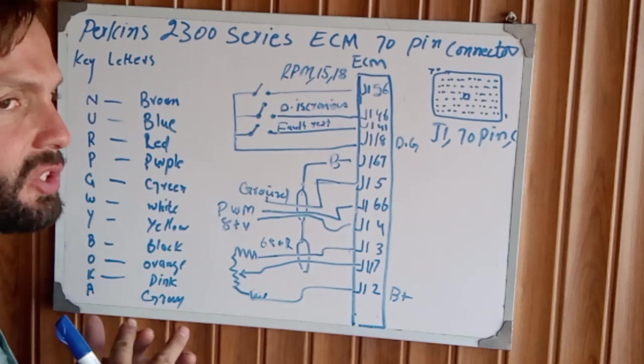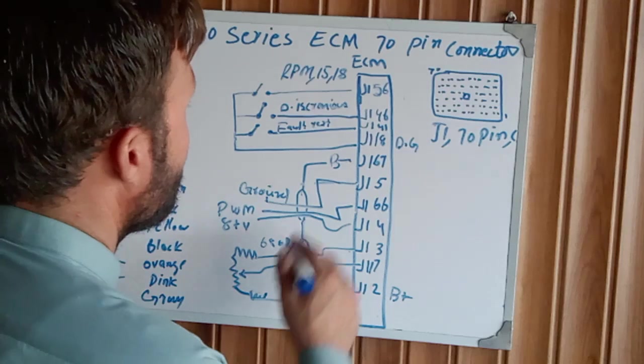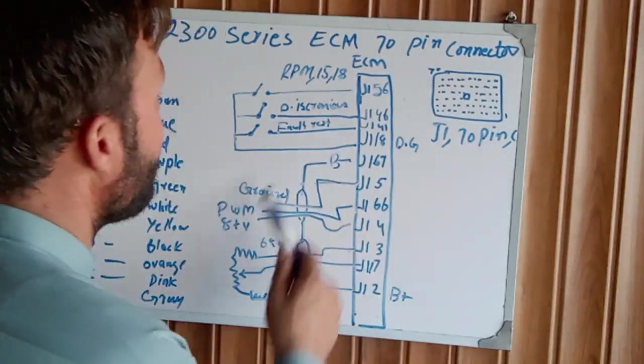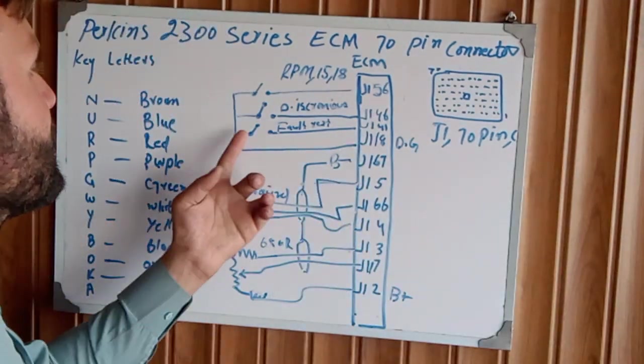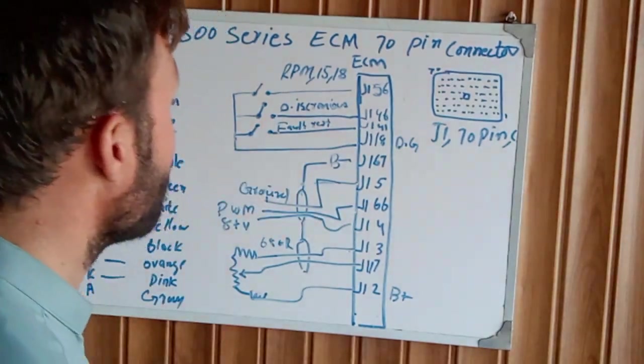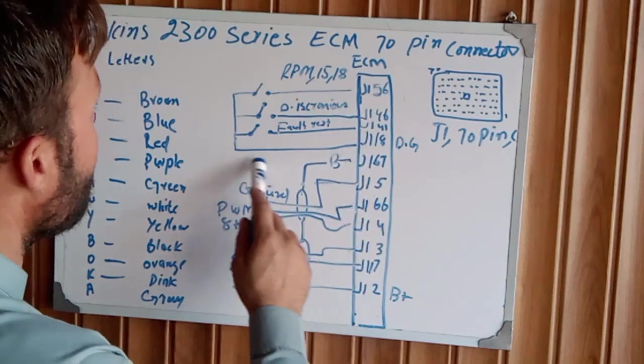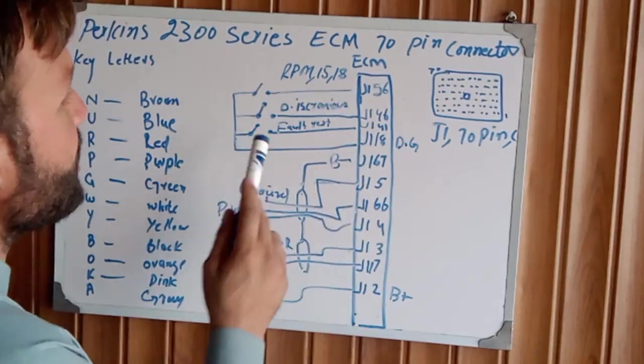J1 41 is the fault reset. You can reset the fault with this switch. And J1 5 is a digital ground. It will be connected with this indication.